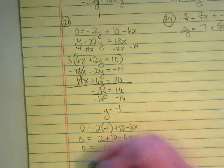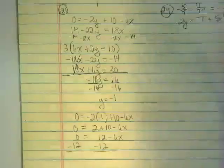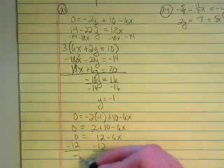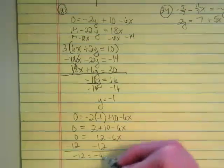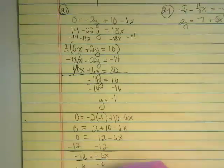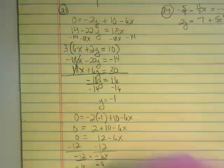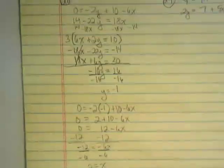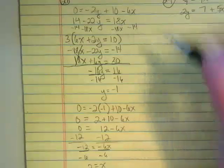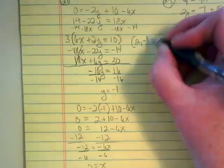I'm going to subtract 12 from both sides. Negative 12 is now equal to negative 6x. Divide by negative 6. Negative 12 divided by negative 6, positive 2. So the answer to this crazy looking original is 2, negative 1.